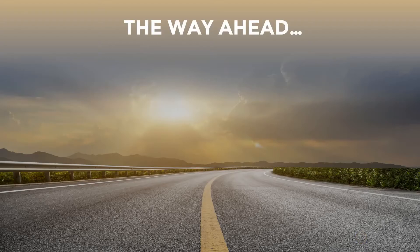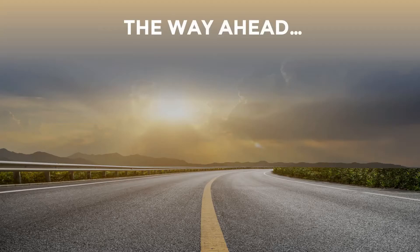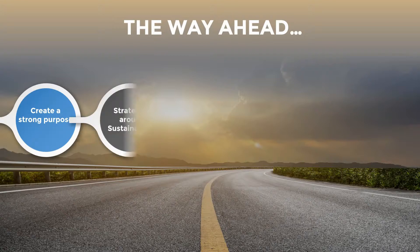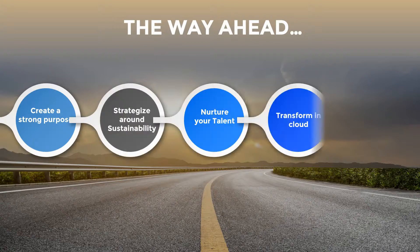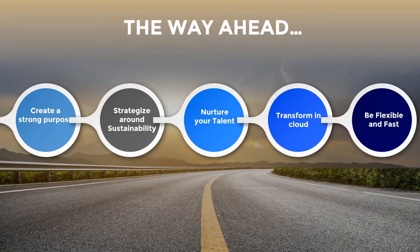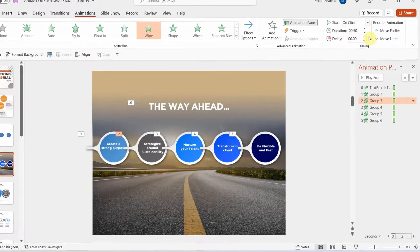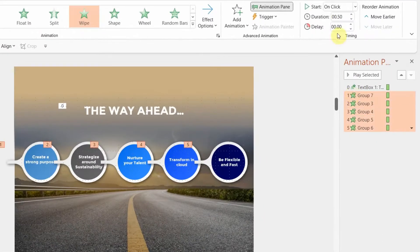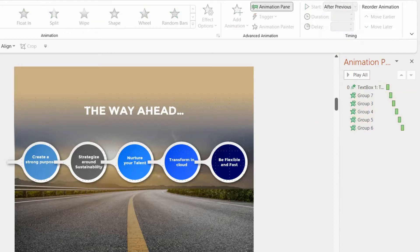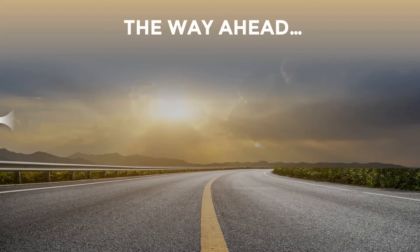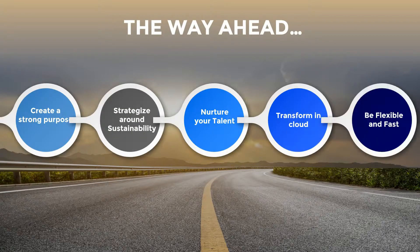On full screen, you can see the moment I arrived on this slide from the previous one, the header came automatically. Then click one, click two, click three, click four, and click five. That's how your slide flows. If you want all elements to come automatically, select all of them and set them to 'After Previous' — now you don't have to click at all and all animations play on their own.